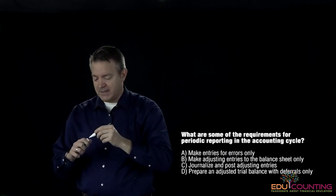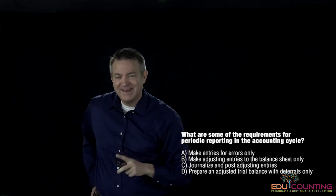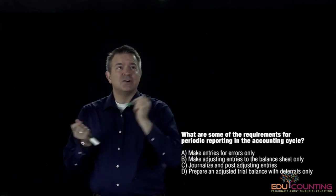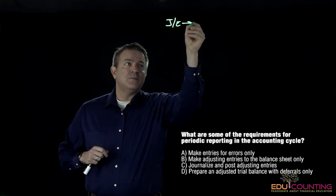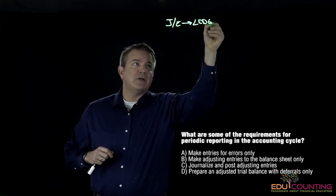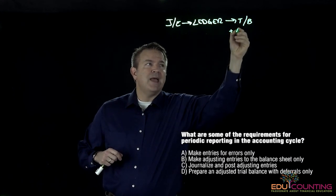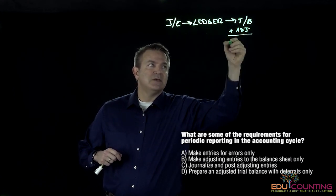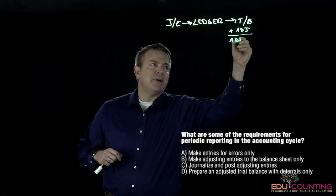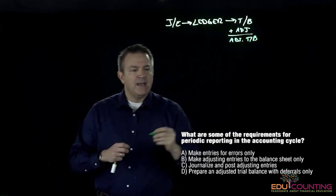Those are our journal entries. We start off with the journal entry, we move to the ledger. After the ledger, we move to the trial balance, and with the trial balance we add those adjusting entries and we get to the adjusted trial balance.